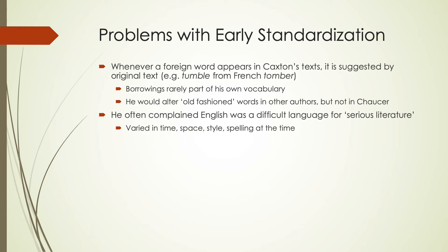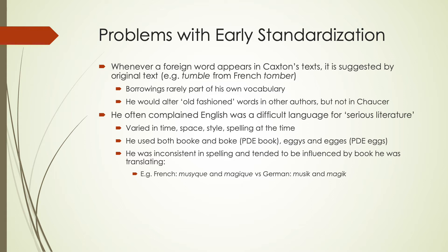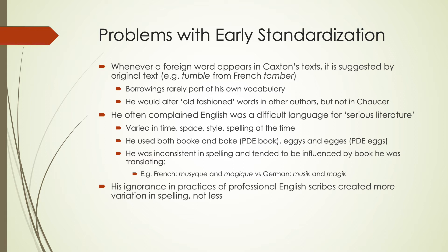Caxton also varied a lot of things in time, space, style, and spelling, and this was a problem with other authors at the time as well. He would use different spellings — for example, 'book' spelled B-O-O-K-E and B-O-K-E. 'Eggs' had different spellings in his different writings. His inconsistencies tended to be influenced by what he was translating — words like 'music' and 'magic' would end with Q-U-E if coming from French, but with a K if coming from German. His ignorance and lack of experience in practices that professional English scribes would have had actually created more variation in spelling during this beginning time period rather than less.